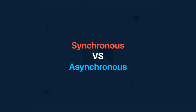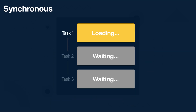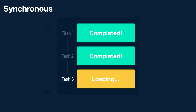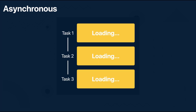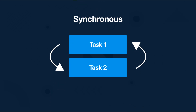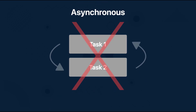Before we start with coroutines we need to learn more about synchronous and asynchronous execution in programming. Synchronous means that the code is executing in sequential order, so if one task is executing then the other one below it will not start until the first one is finished. Asynchronous means that you can move on to another task even before the first one is finished — they are totally independent of one another.